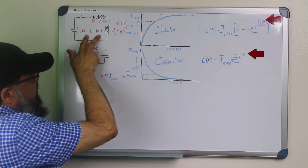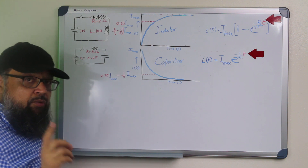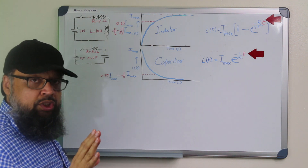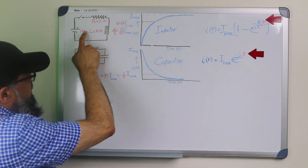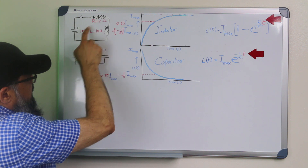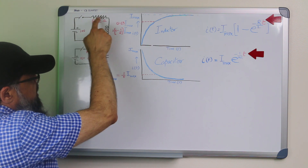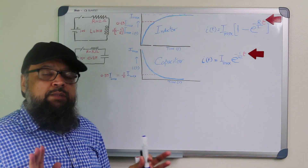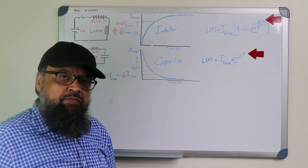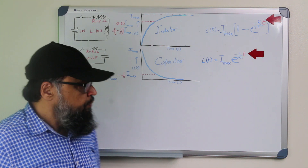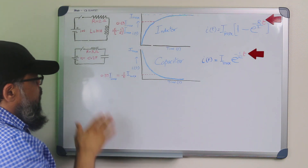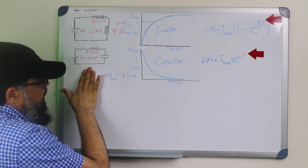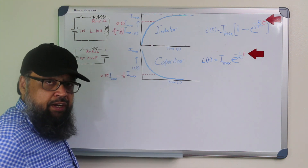For this kind of circuit, the maximum value of current which can ever pass through this circuit is 10 divided by 2 — this resistor — which is 5 amps. This is the maximum value of current. For the capacitor RC circuit, it happens in the opposite way.